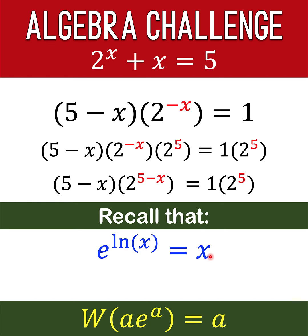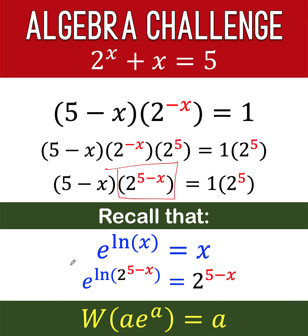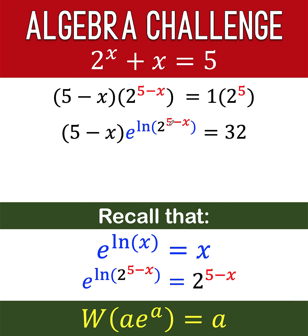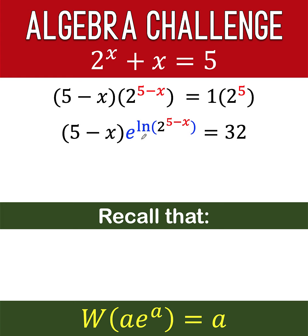This means the factor 2 raised to 5 minus x can be replaced by e raised to ln of 2 raised to 5 minus x, which is what we want for the Lambert W formula. We now replace the second factor by this result — e raised to ln of the quantity 2 raised to 5 minus x — since these two expressions are equal. However, this exponent of e and the factor before e are not yet the same, so our next goal is to make them match.